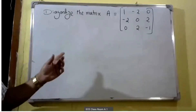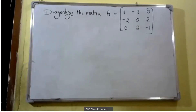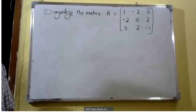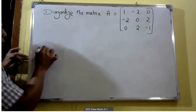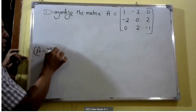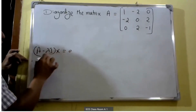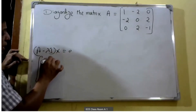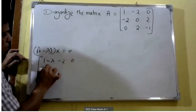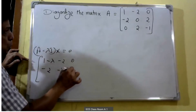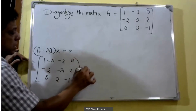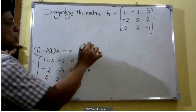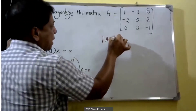Good morning students. Diagonalize the matrix A equal to [1, -2, 0; -2, 0, 2; 0, 2, -1]. In order to diagonalize the matrix, first we find the eigenvalues. The eigenmatrix A minus lambda I is equal to zero, giving us [1-λ, -2, 0; -2, -λ, 2; 0, 2, -1-λ] times x equals zero. To find the eigenvalues, we set the determinant of A minus lambda I equal to zero.